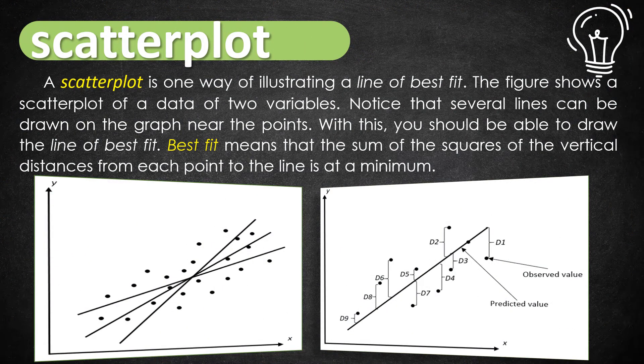A scatterplot is a way of illustrating a line of best fit. The figure shows a scatterplot of data of two variables. As you've noticed, several lines can be drawn on the graph near the points. With this, you should be able to draw the line of best fit. Best fit means that the sum of the squares of the vertical distances from each point to the line is at a minimum. We have the predicted value and the observed value.